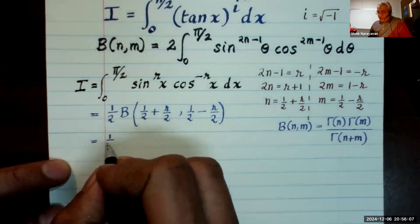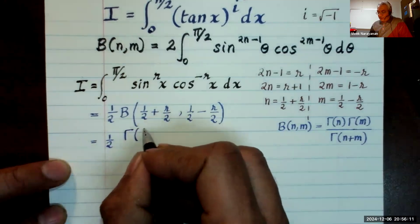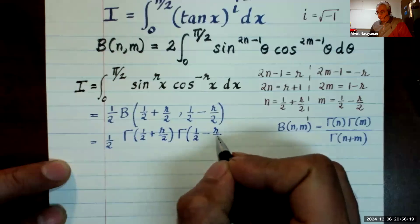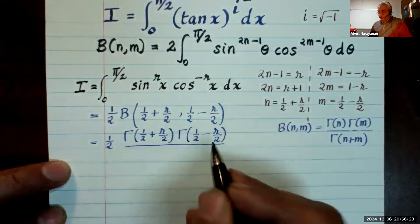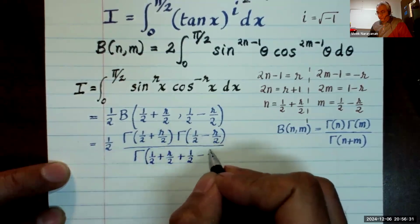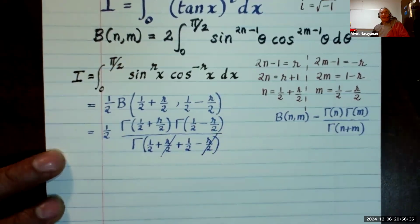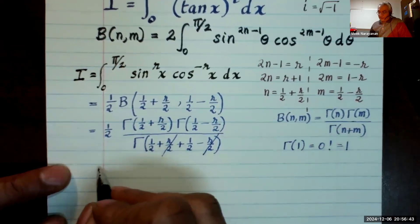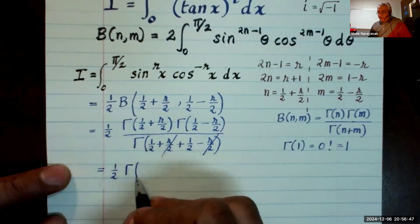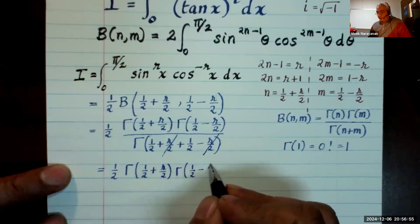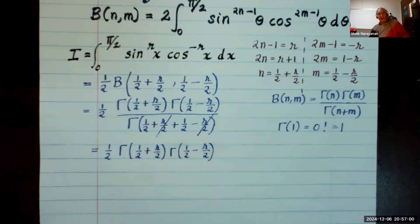So I can use this. So I have 1/2 gamma of 1/2 plus r/2 times gamma of 1/2 minus r/2 divided by the sum of those two things, which is gamma of 1/2. Lo and behold, that cancels. And then I have gamma of 1. Well, gamma of 1 is just 0 factorial, which is just 1. So that gives me 1/2 gamma of 1/2 plus r/2 times gamma of 1/2 minus r/2.